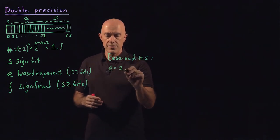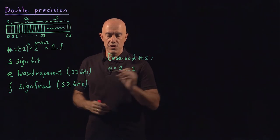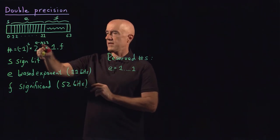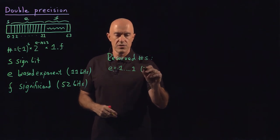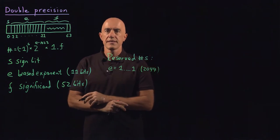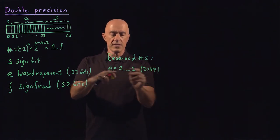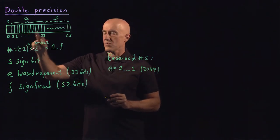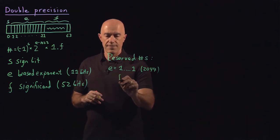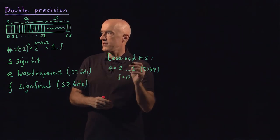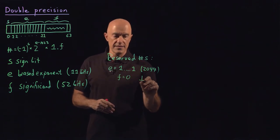That would be the largest possible value of E, which is 2,047 in decimal. So if E is all ones, we reserve that number in two ways. If F is all zeros, then this number is reserved as infinity.